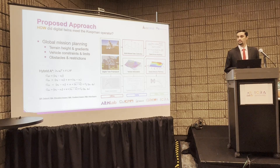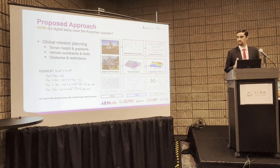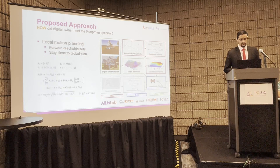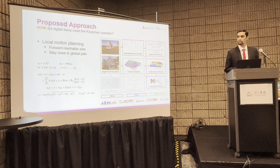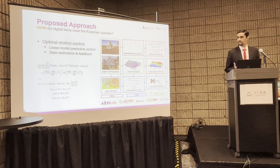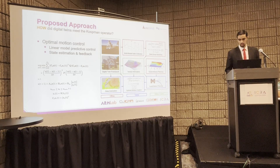With the models and terrain information, we can perform global mission planning. The baseline idea is to adopt a hybrid A* approach to respect the accurate steering constraints for the vehicle. We have also defined heuristics that account for the safety, comfort, and power efficiency of the robot, which result in different mission plans. For local motion planning, the idea is to perform projection of forward reachable sets in the lifted space, select the candidate closest to the global mission plan in terms of cross-track error, and use that as the reference for a linear model predictive control framework with simultaneous state estimation and feedback for closed-loop control in real time.